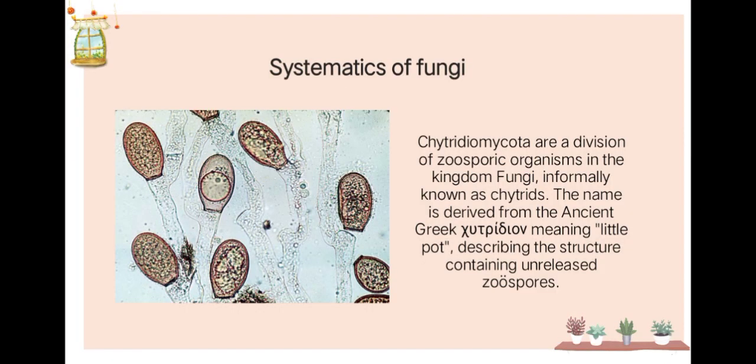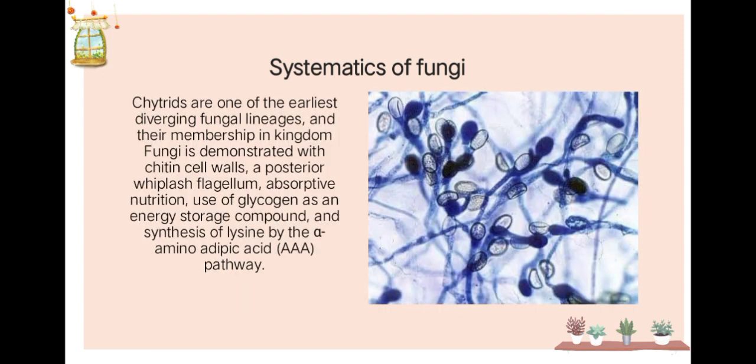Now, the systematics of fungi. We have Chytridiomycota, a division of zoosporic organisms in Kingdom Fungi, informally known as chytrids. The name is derived from the ancient Greek meaning 'little pot,' describing the structure containing unreleased zoospores. Chytrids are one of the earliest diverging fungal lineages, and their membership in Kingdom Fungi is demonstrated by chitin cell walls, a posterior whiplash flagellum, absorptive nutrition, use of glycogen as an energy storage compound, and synthesis of lysine by the amino acid or dipicolinic acid pathway.